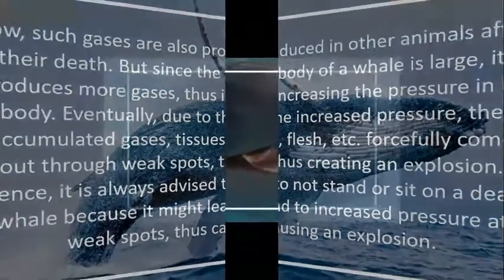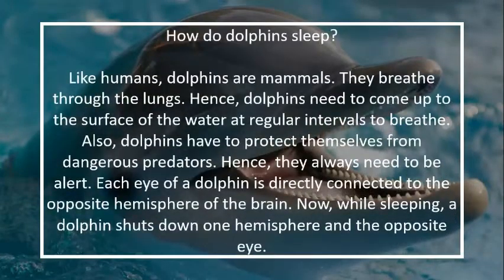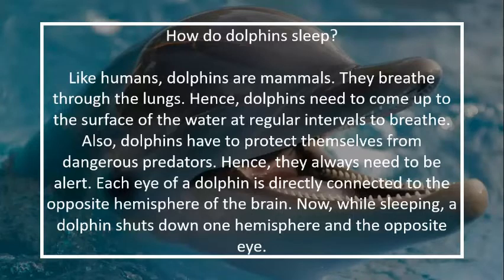How do dolphins sleep? Like humans, dolphins are mammals — they breathe through their lungs, so dolphins need to come up to the surface of the water at regular intervals to breathe. Dolphins also need to protect themselves from dangerous predators and hence always need to be alert. Each eye of a dolphin is directly connected to the opposite hemisphere of the brain, and while sleeping, a dolphin shuts down one hemisphere and the opposite eye.